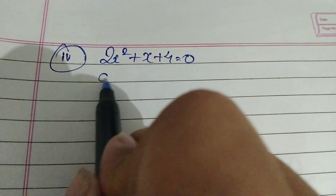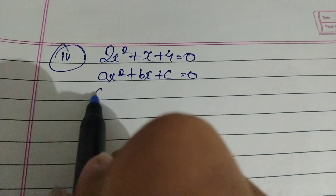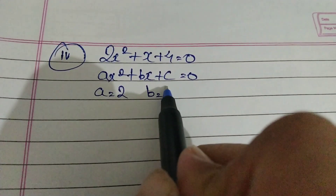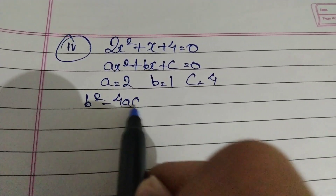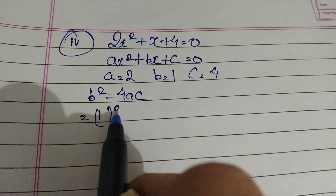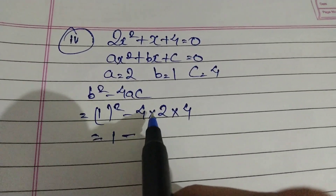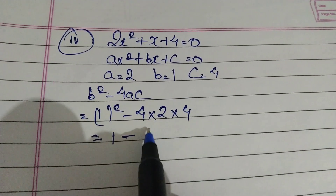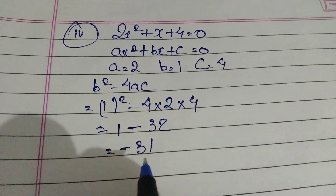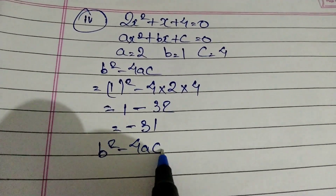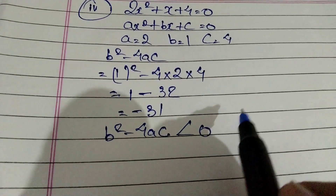Let's do serial number 4. Comparing with ax² + bx + c = 0, here a is 2, b is 1, and c is 4. Using the same discriminant formula: b² minus 4ac — b is 1, so 1² minus 4 into 2 into 4 equals 1 minus 32, which equals minus 31. So b² minus 4ac is less than 0.